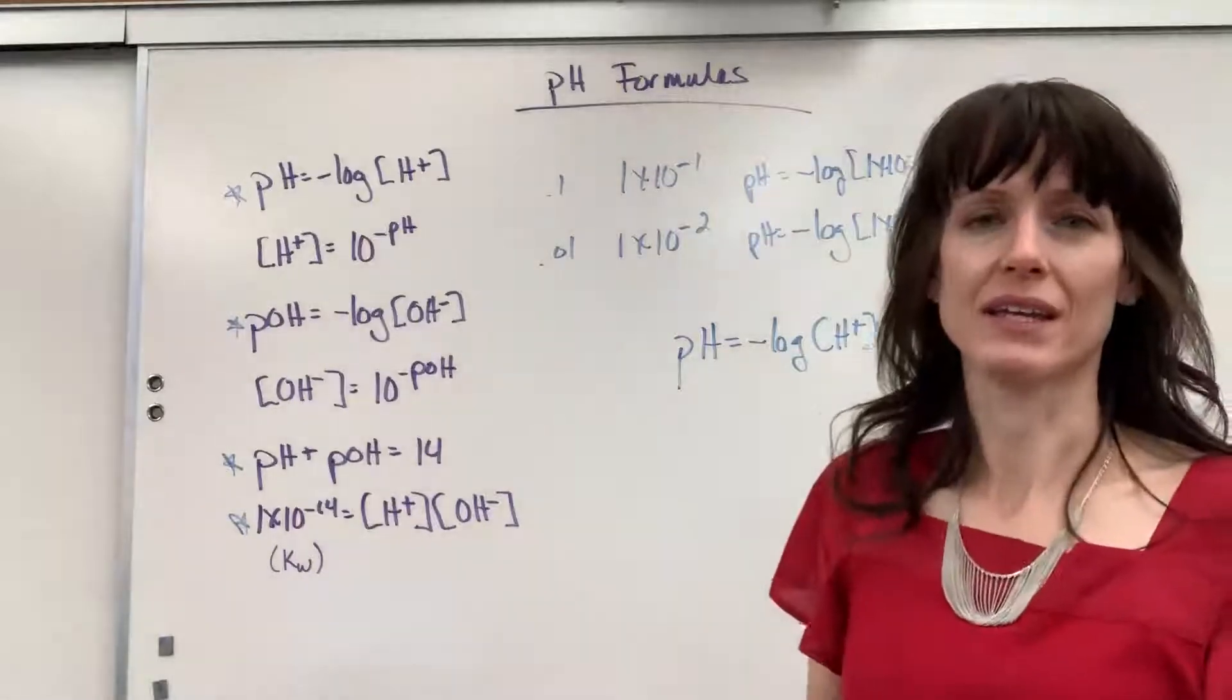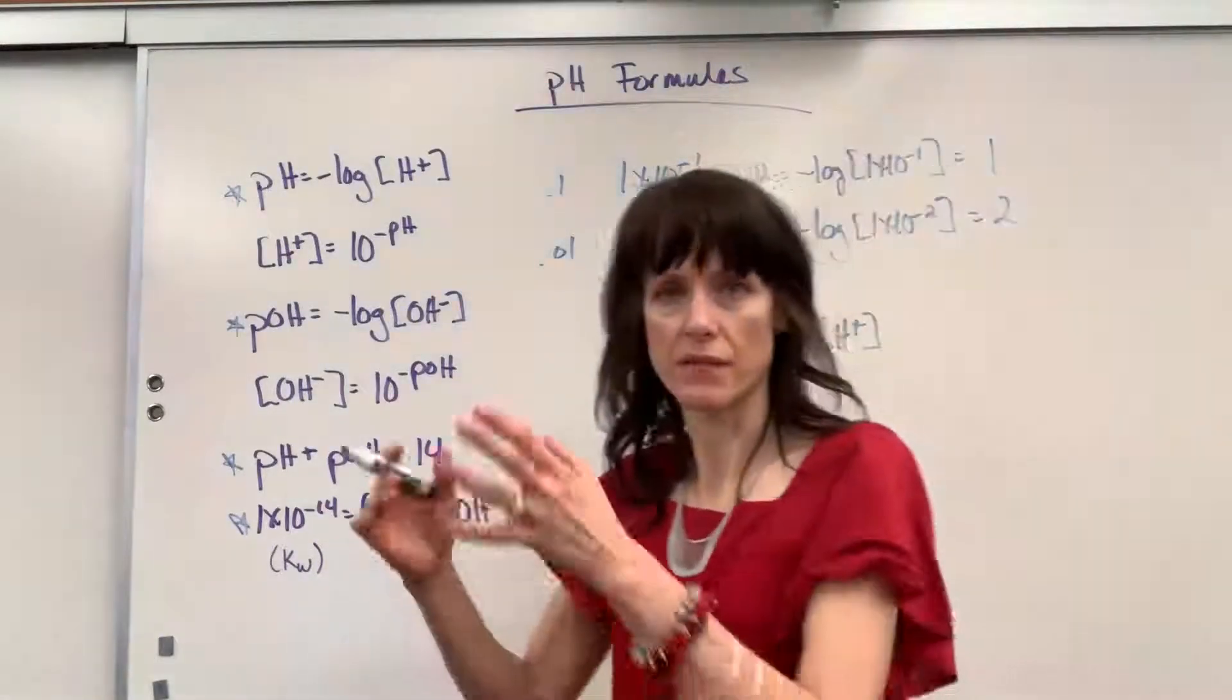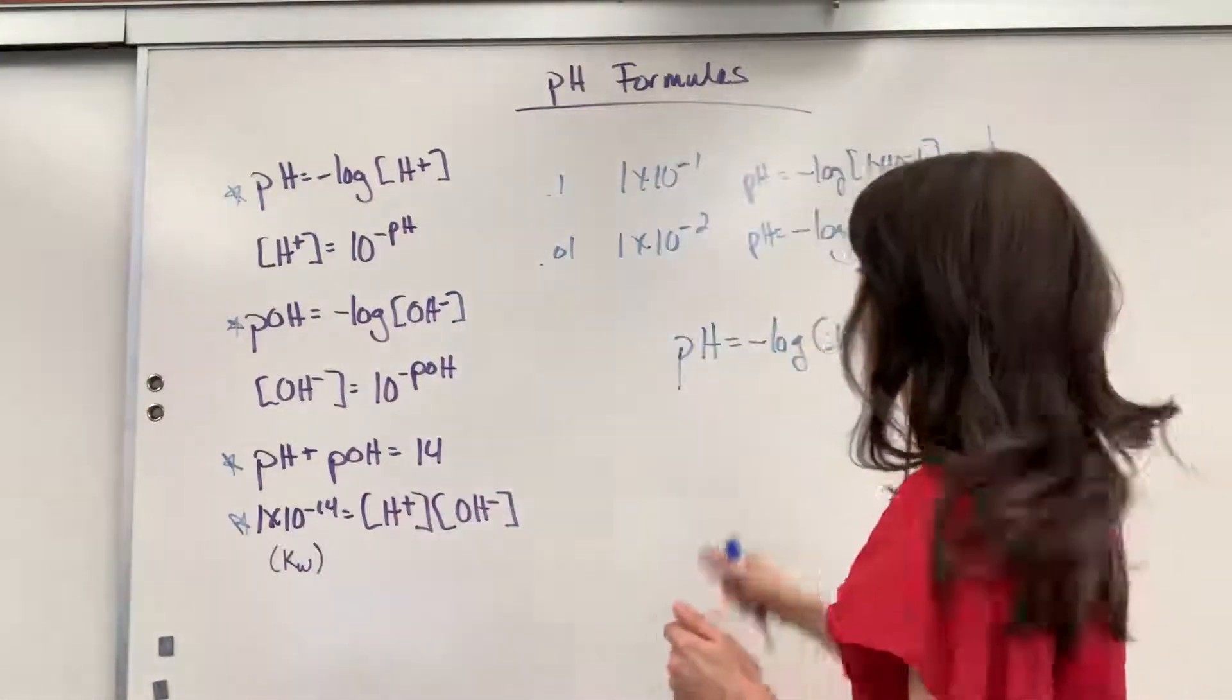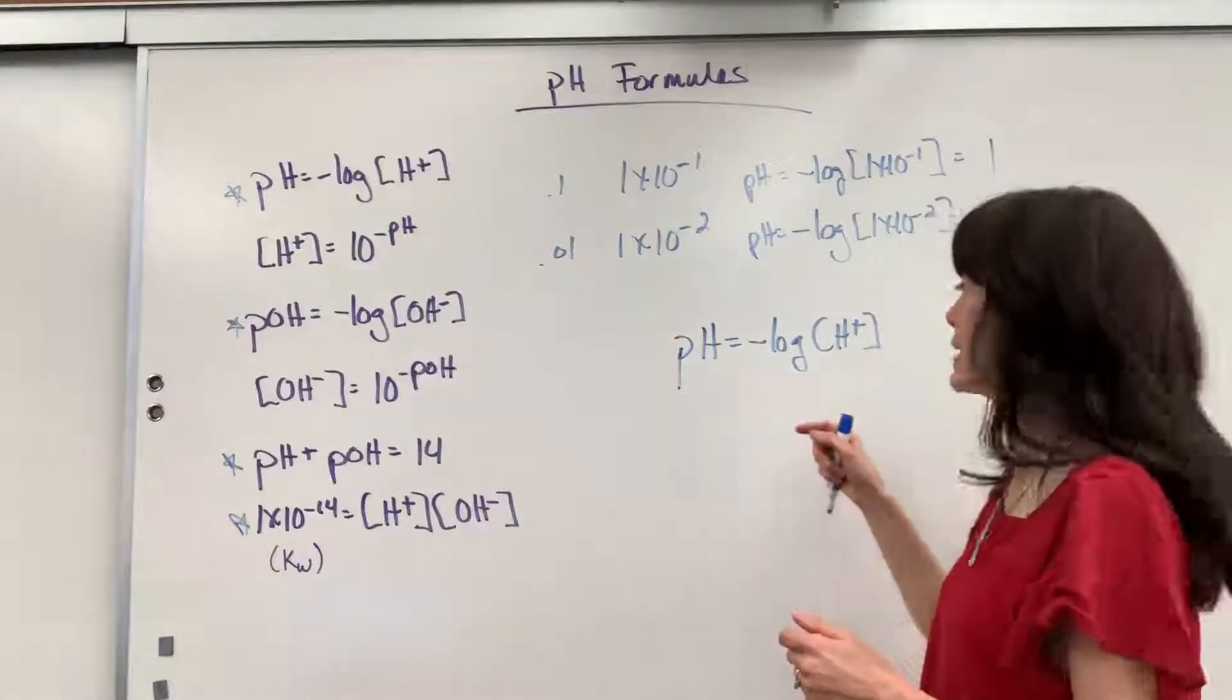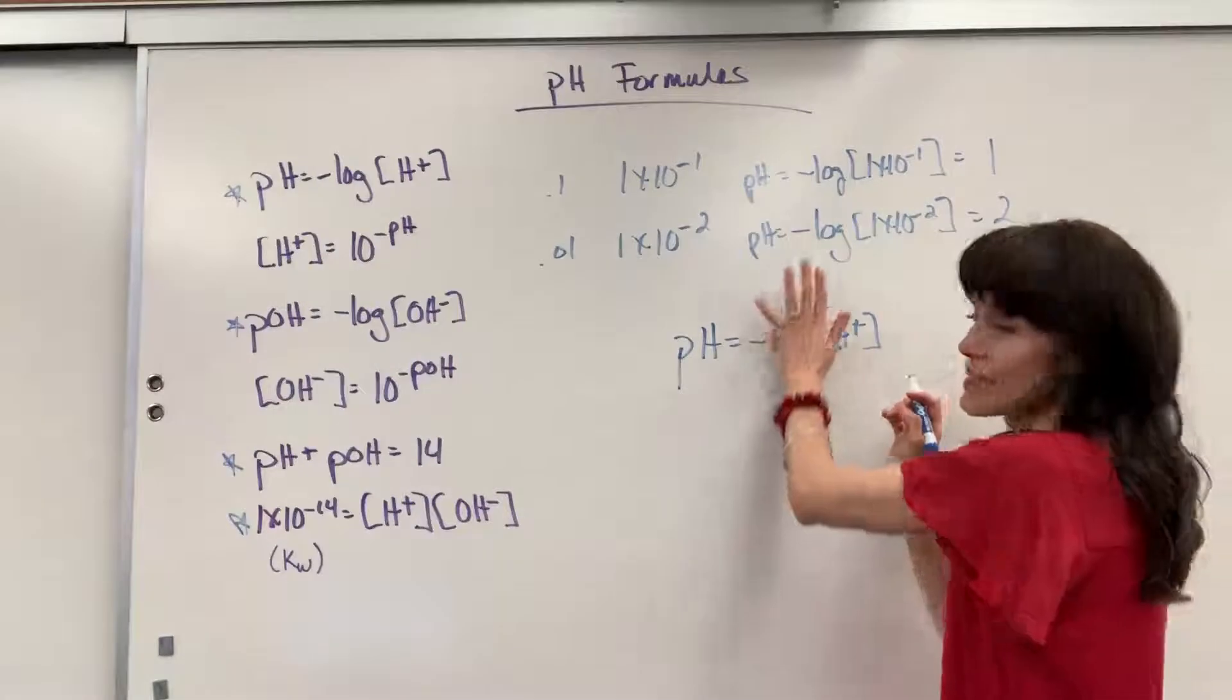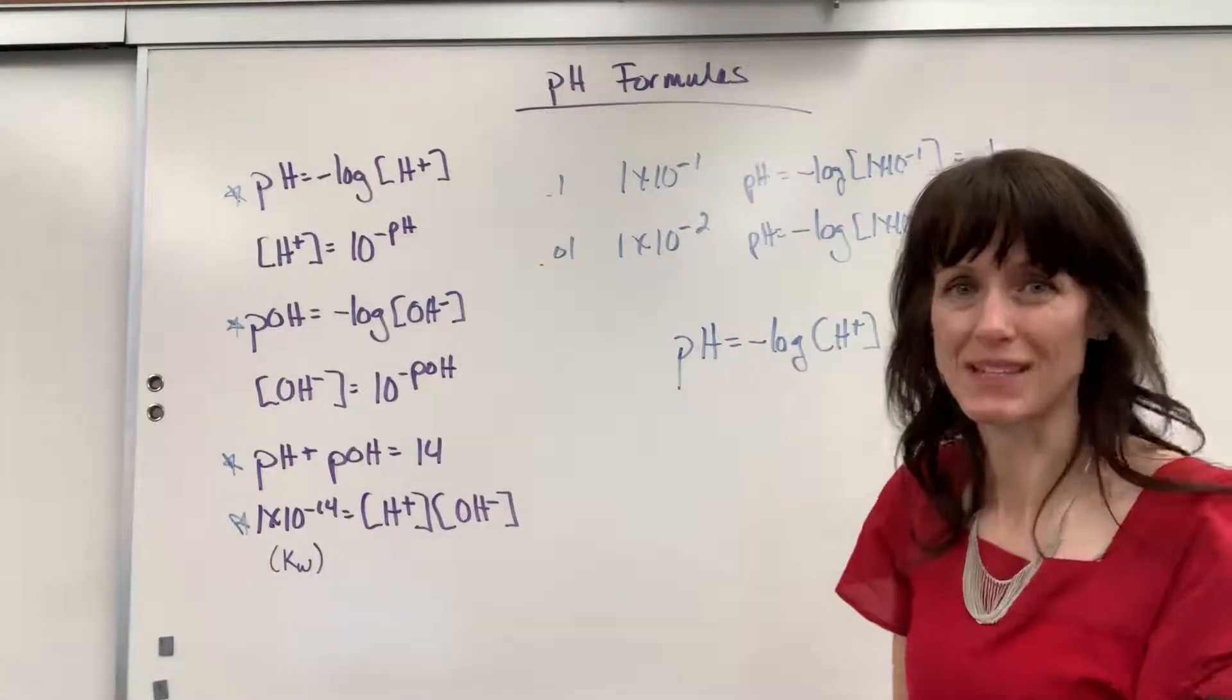So, pH equals negative log of hydrogen concentration. The opposite of log is base 10, just like the opposite of addition is subtraction, the opposite of multiplication is division. The opposite of log is base 10. So, to get that hydrogen concentration unlocked, to get rid of that log, you raise both sides to the base 10.